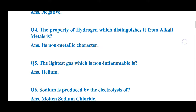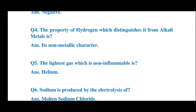Question number 4: The property of hydrogen which distinguishes it from alkali metals is — what property of hydrogen distinguishes it from alkali metals? The answer is its non-metallic character. The property of hydrogen which distinguishes it from alkali metals is its non-metallic character.